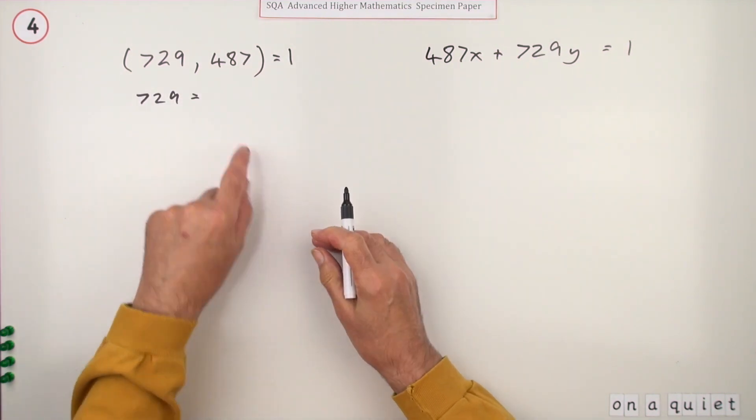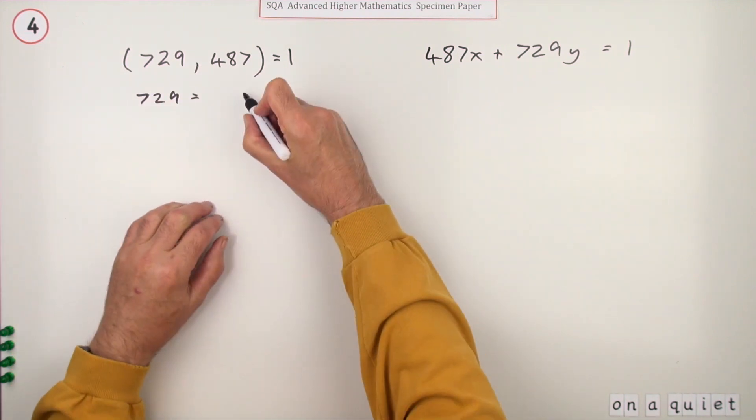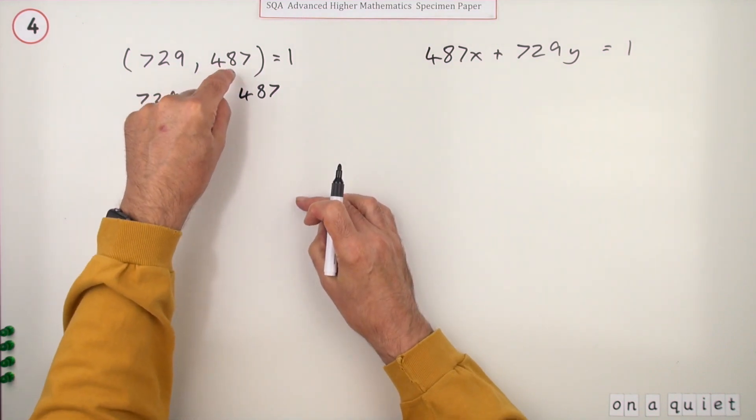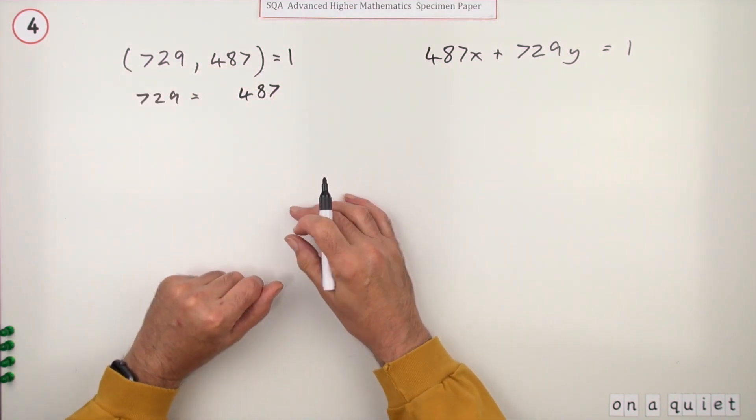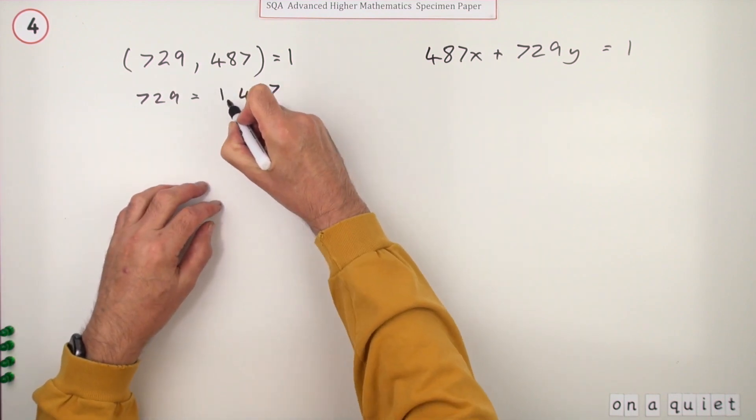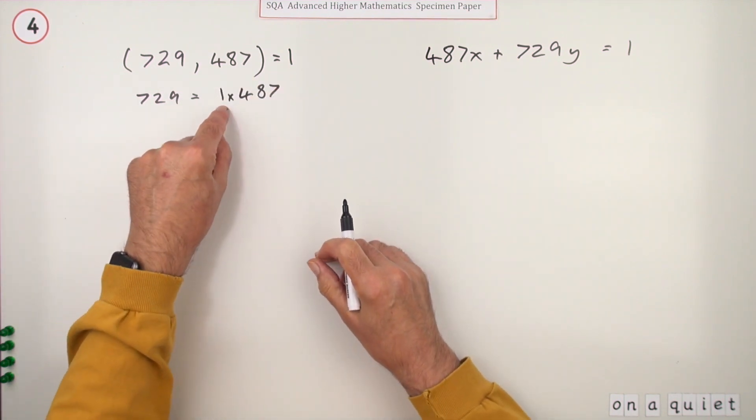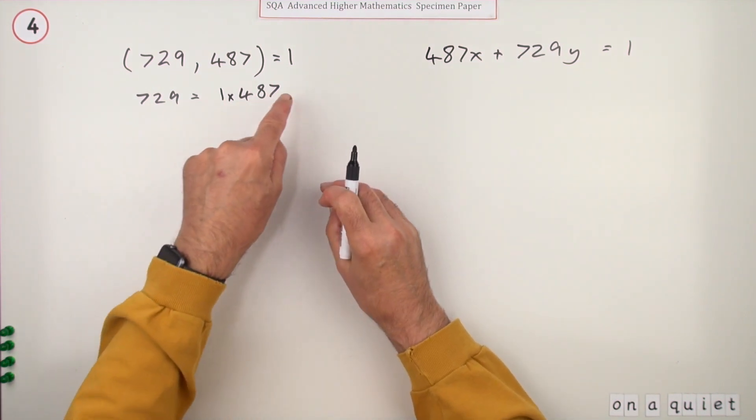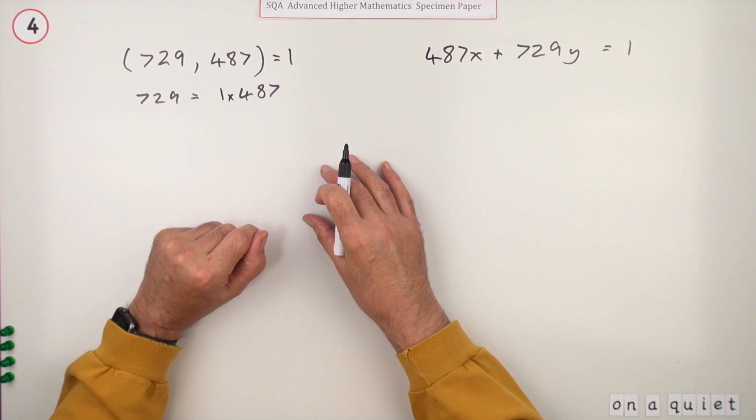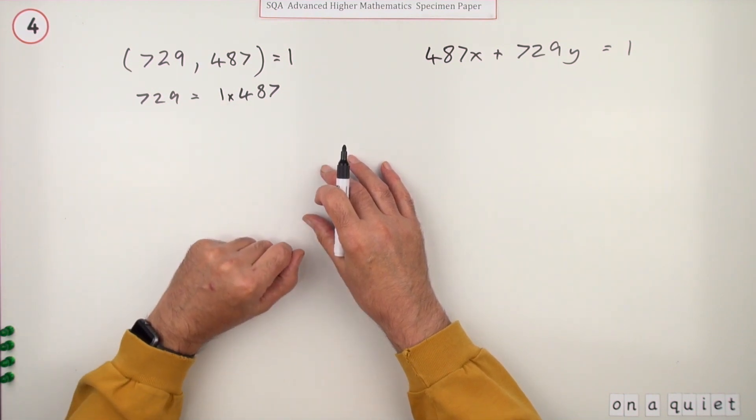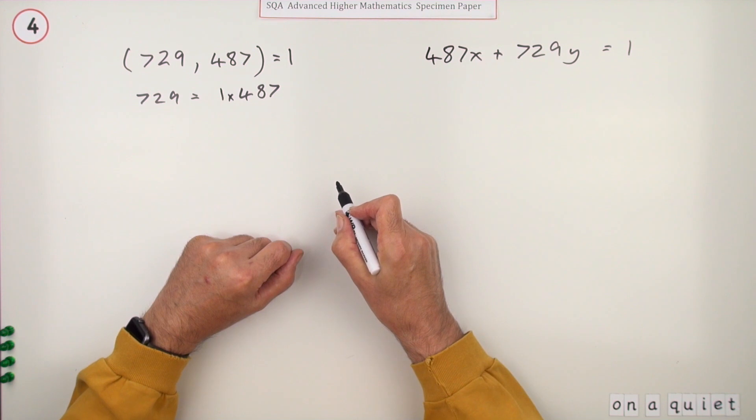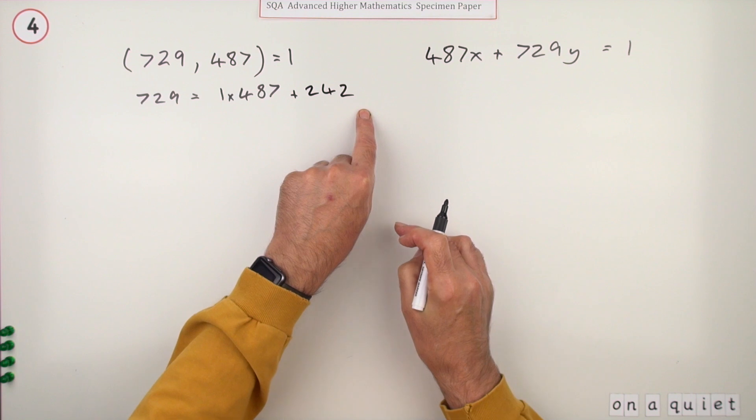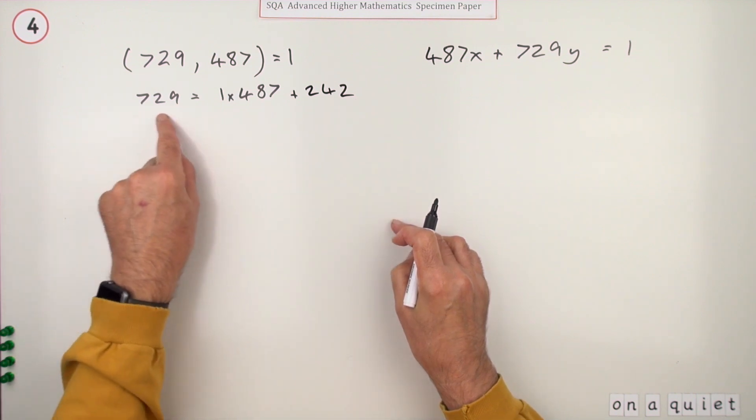The first thing you test is does 487 divide exactly into 729? When you divide it, it only goes in one time. I prefer to have that at the front. You can put it at the end like in the marking scheme, but there are benefits to having it at the front. Unfortunately there's a remainder of 242.